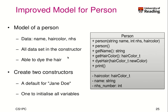Let's improve our model. Now we have data: name, hair color, and I also add the NHS number. All this data gets set in the constructor, which takes three arguments: name, NHS, and hair color. We also create a default constructor for a person — a typical UK representative called Jane Doe — which has a fake NHS number and some real hair color. So we can easily create person objects with this default person.